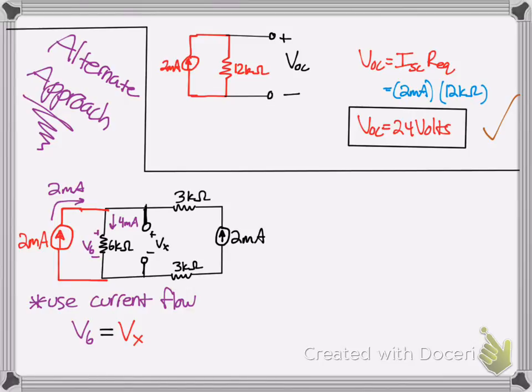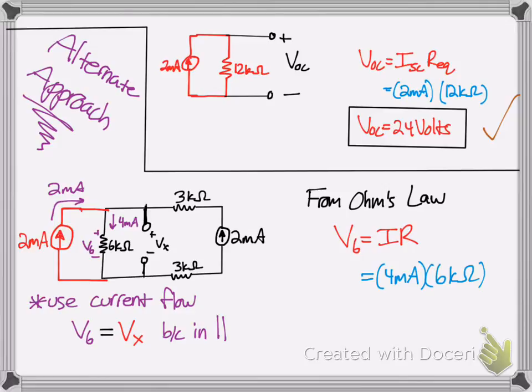So now that we have that 4 milliamps there, we can calculate the voltage across it. The shortcut here, by using this alternate approach, you have to know that V6 and Vx, since they're in parallel, have the same voltage. From Ohm's Law, we know V6 is IR. We noticed by current flow is 4 milliamps times the 6 kiloohm resistor across it, which gives us 24 volts. So since V6 is 24 volts, that means Vx has to be 24 volts.